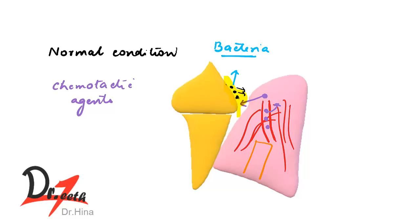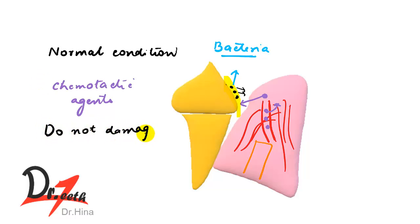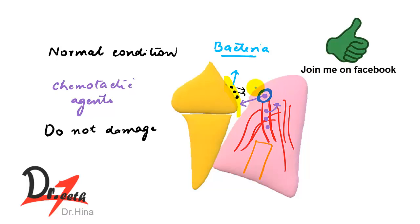Under normal conditions, the transmigrating neutrophils cause no damage. These neutrophils are the primary line of defense around the teeth, and the epithelial barrier is the second line of defense.